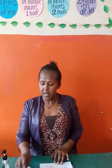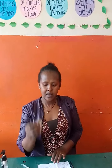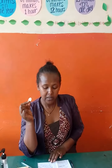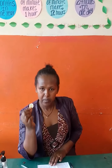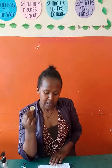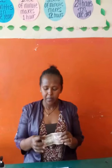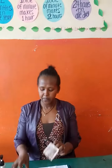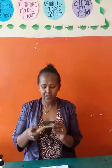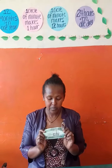Now I will show you some notes and coins. This is one birr in cents and in birr notes. This is five birr notes. This is ten birr notes. This is fifteen birr notes. This is one hundred birr notes.